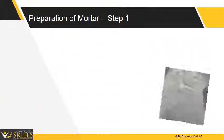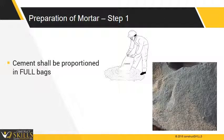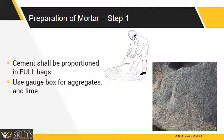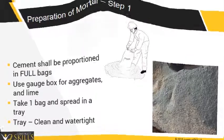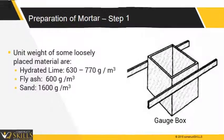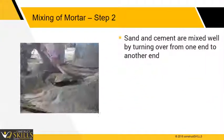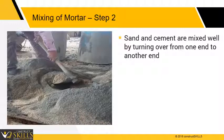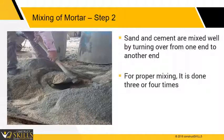Preparation of cement mortar: cement shall be proportioned only by full bags. Hydrated lime and aggregates shall be measured by volume using gauge boxes of suitable capacity. Take one bag and spread it in a tray. The tray should be clean and watertight. Unit weights of some loosely placed materials are shown. Sand and cement are mixed well by turning over from one end to another. For proper mixing, this is done 3 or 4 times to obtain a uniform color of the dry mix.